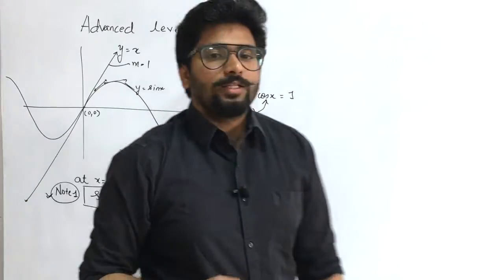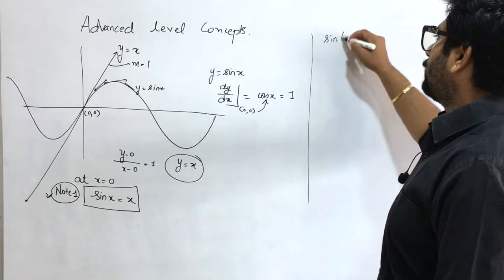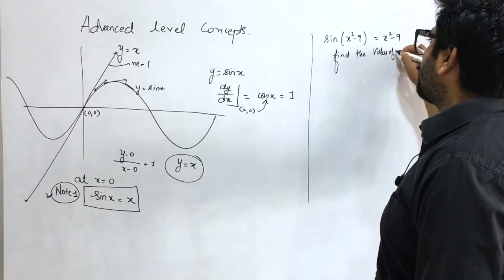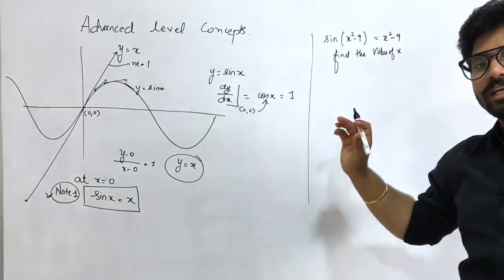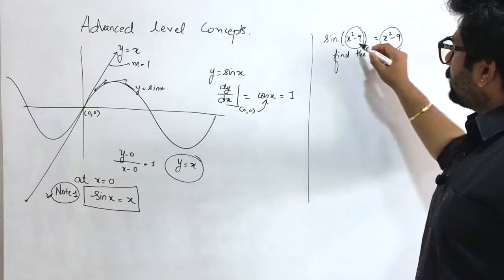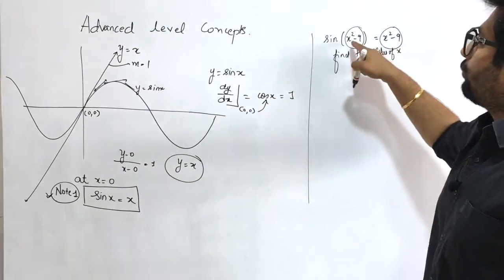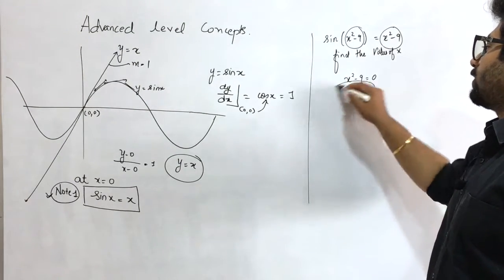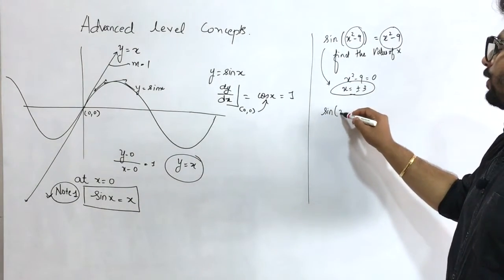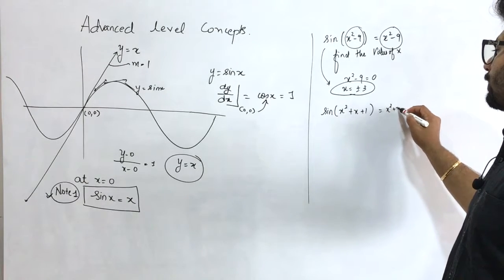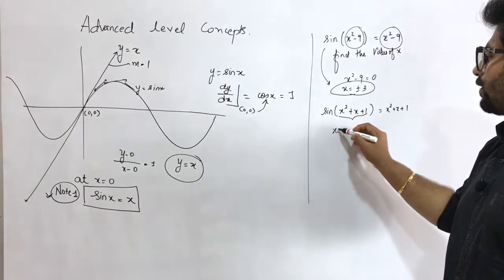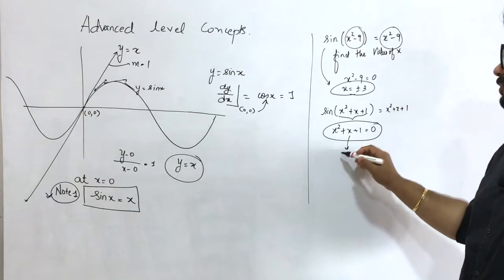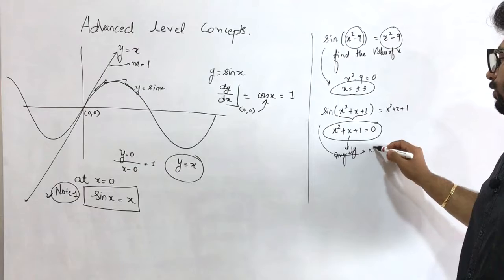What type of question can come from this? For example: sin(x² − 9) = x² − 9, find the values of x satisfying this equation. This equation is satisfied only when the argument of sin equals zero. So x² − 9 = 0, giving x = ±3. Similarly, if you have sin(x² + x + 1) = x² + x + 1, this holds when x² + x + 1 = 0. But this is a quadratic with imaginary roots, so there is no real solution.